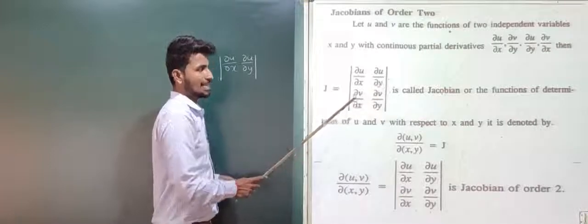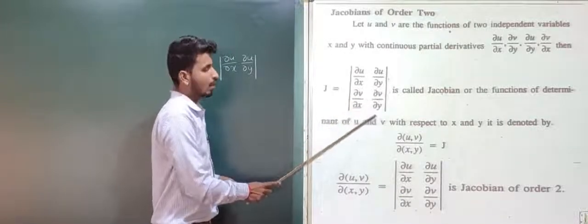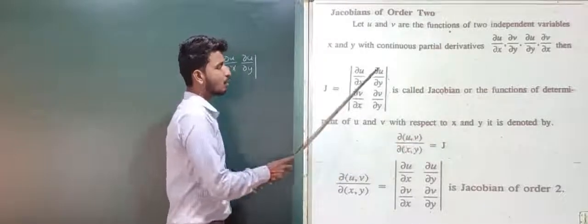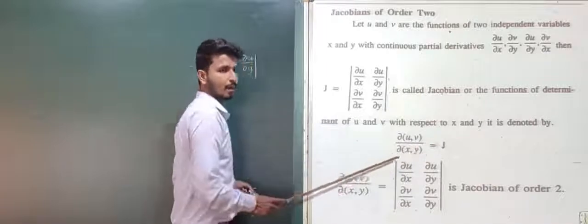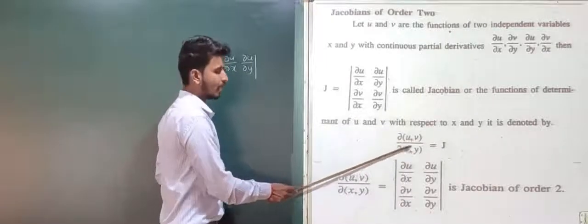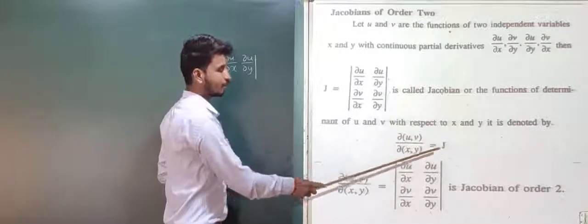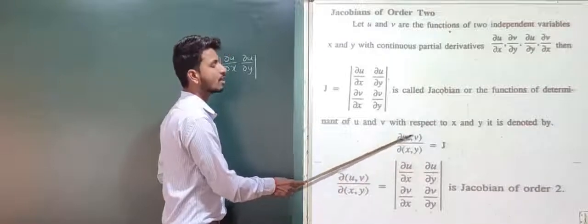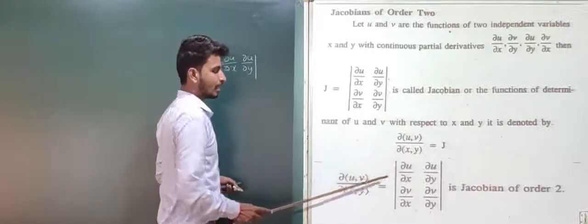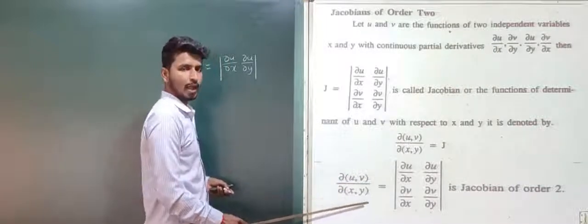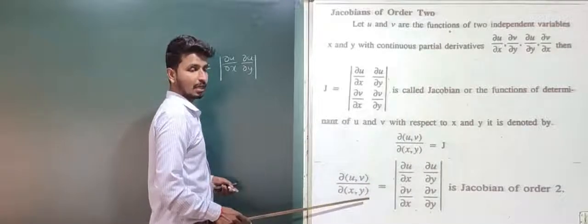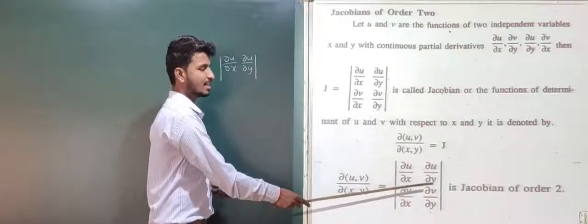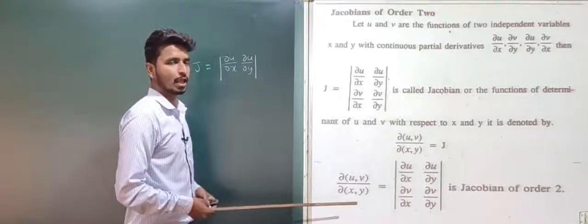This determinant is called the Jacobian of functions u and v with respect to x and y, denoted as ∂(u,v)/∂(x,y), also written as J(∂(u,v)/∂(x,y)). It equals the determinant with elements ∂u/∂x, ∂u/∂y in the first row and ∂v/∂x, ∂v/∂y in the second row. This is the Jacobian of order 2.